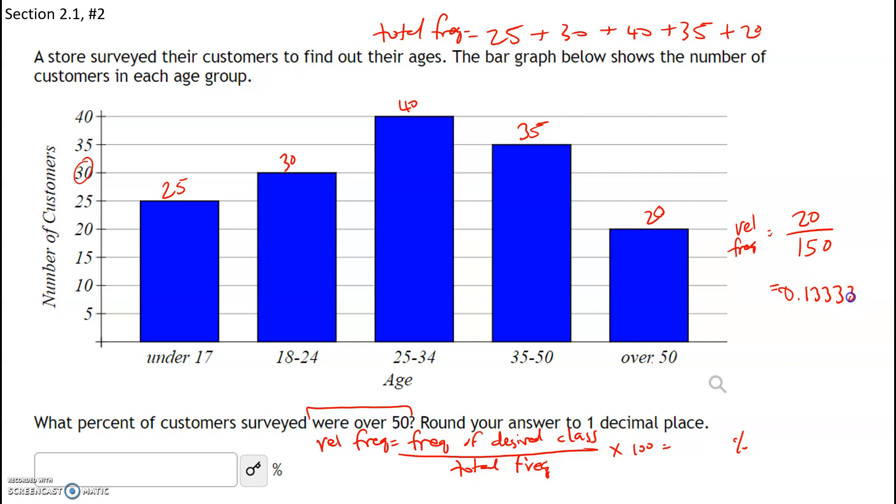And in any middle step, keep at least five or six decimals. So we have 0.133333, but we want to answer in percent form. So we're going to multiply this by 100, and this gives us 13.3333%. The question says round to one decimal.